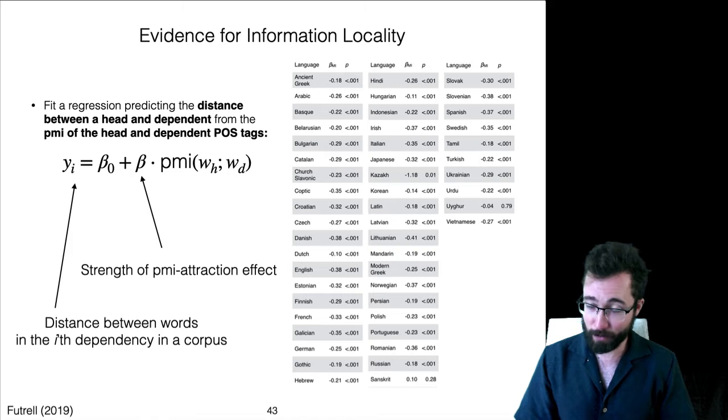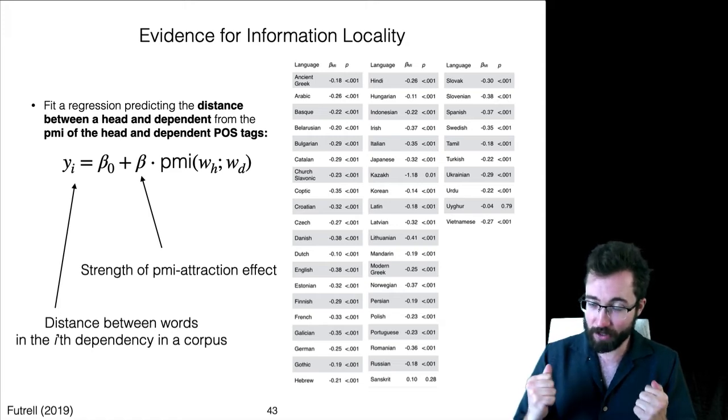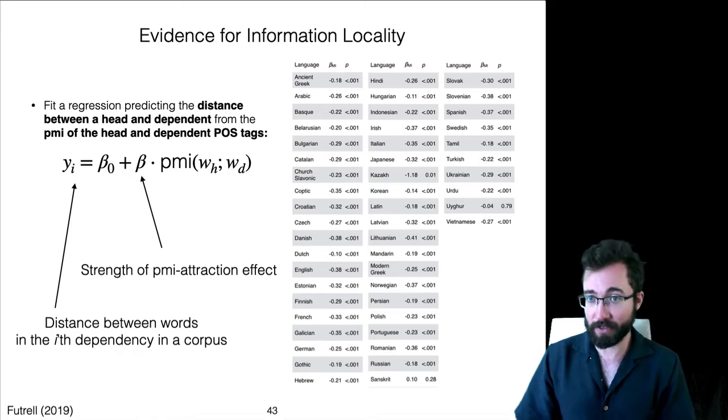The only exceptions here are very small corpora. And in fact, the estimate is basically minus 0.3 across languages. So, if two words have one bit of PMI, then they are on average 0.3 words closer to each other across languages.